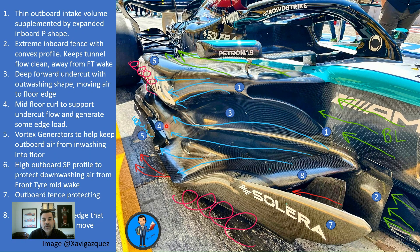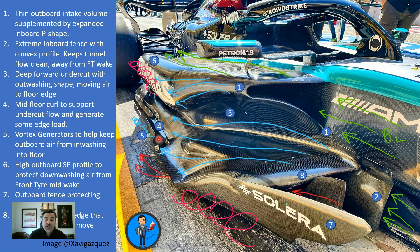In the mid-floor region, you can see there's a nice big fat curl — most teams are running these curls. In my opinion, this is providing a bit of pressure support for the undercut. Think of it as all this air moving under the undercut, chasing areas of least resistance. The floor edge itself is very attractive to undercut flow because there's a lot of low pressure along the floor edge. To combat that, you create a region of higher static pressure by creating a curl like this, which acts as a physical barrier and generates a localized pressurization that provides pressure support.